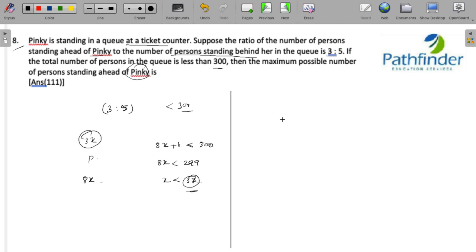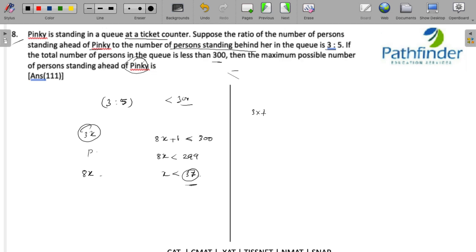The maximum number of people standing ahead of Pinky is 3 into x which is equal to 3 into 37, that is 111. That should be your answer.